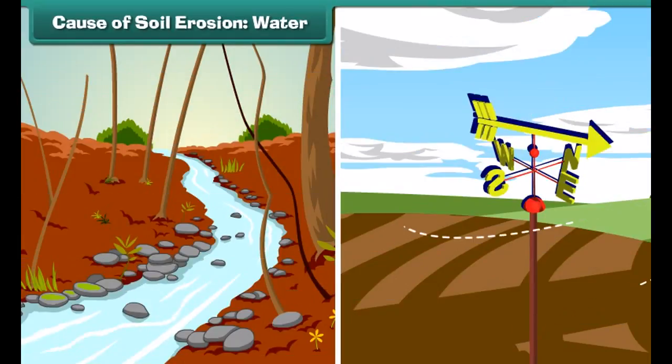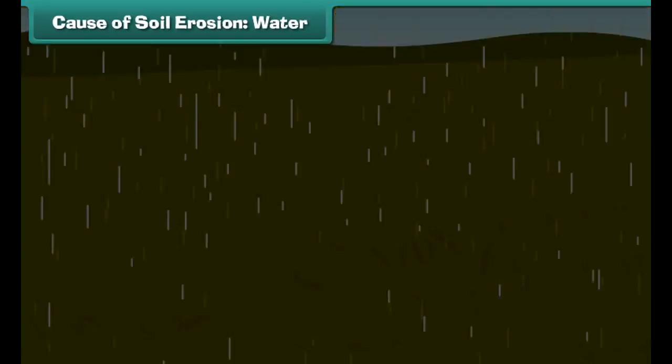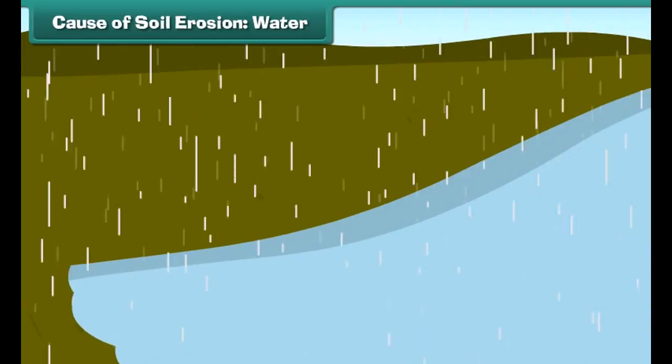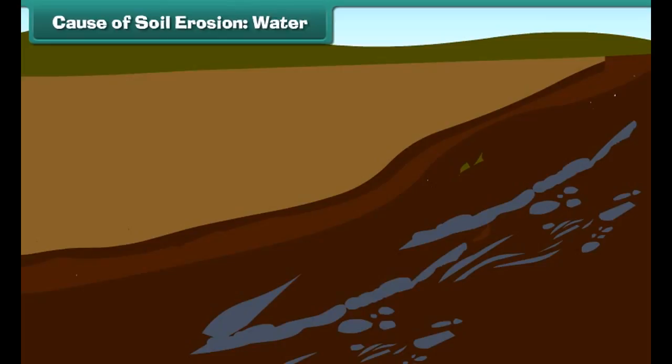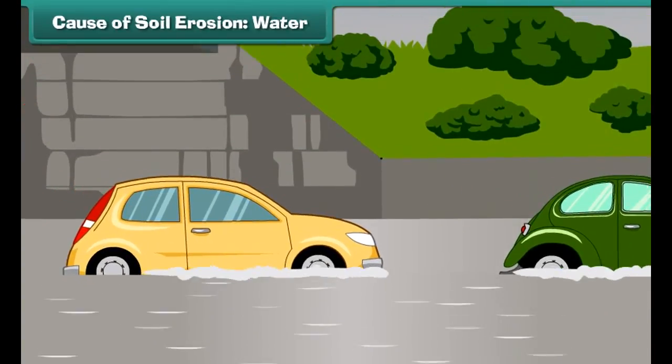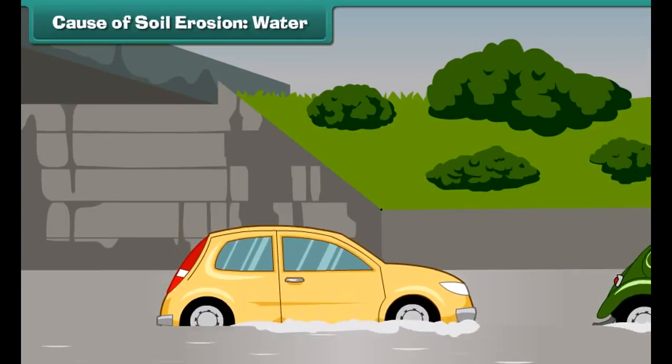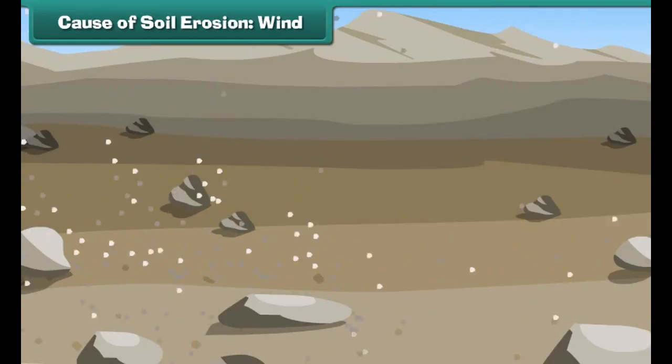Friends, let us know the factors which cause soil erosion. The most common factors are water and wind movements. Water flowing through ground carries away soil with it. During rain, the soil particles are detached by rain drops. These soil particles are carried away by the running water. Floods are also the main cause behind soil erosion.